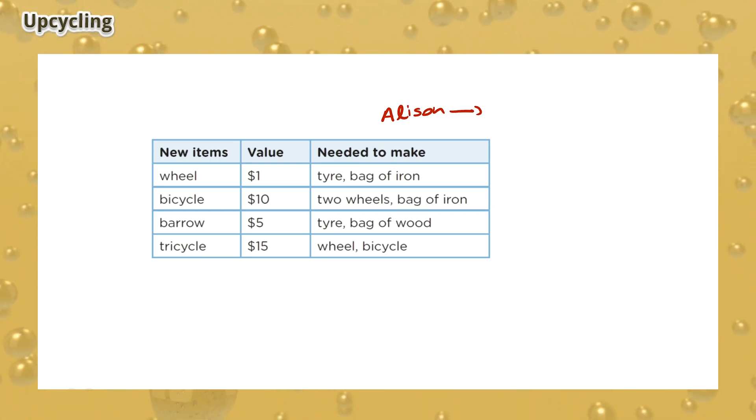Originally, Alison has six tires, six bags of iron and two wheels. There are many possibilities Alison can take to make the most profit. Take the possibility if Alison chooses to build a tricycle first.